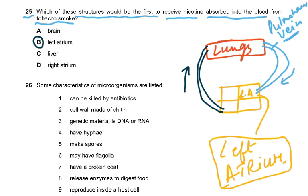The question asks which structure would be the first to receive nicotine absorbed into the blood from tobacco smoke. The lungs are where it's absorbed, so from the lungs the blood goes into the pulmonary vein, which carries it to the left atrium. If you didn't know the circulatory system, this was a difficult question.